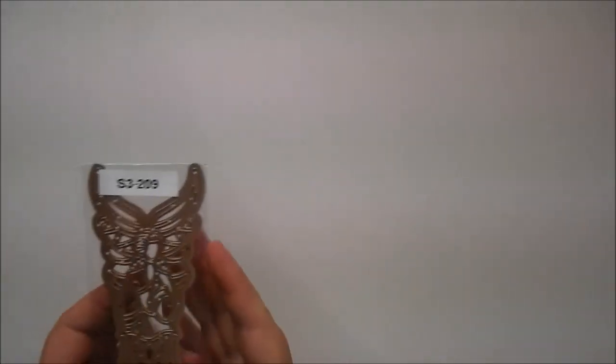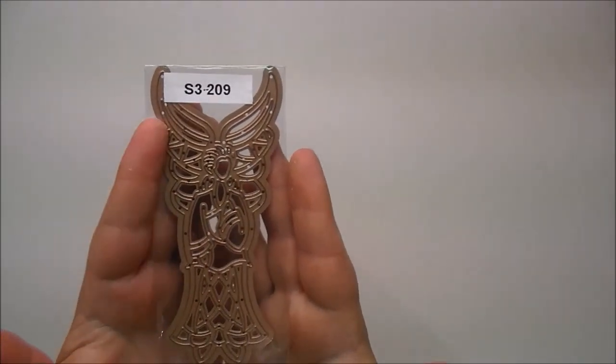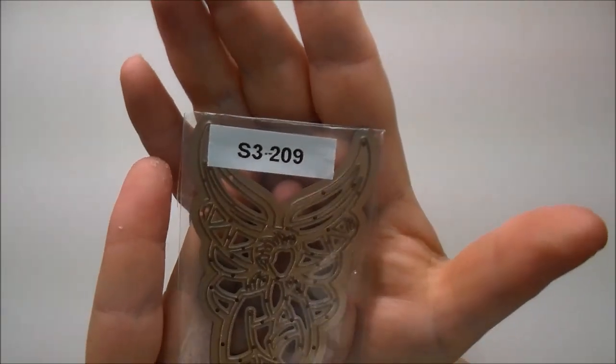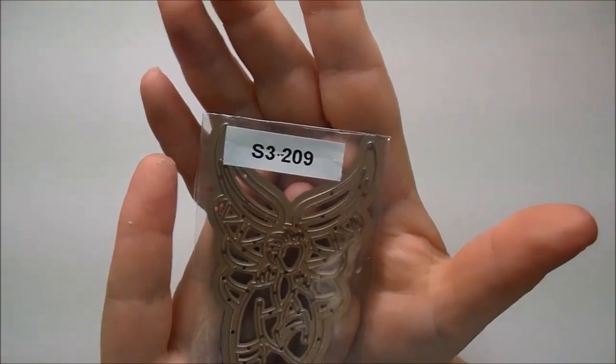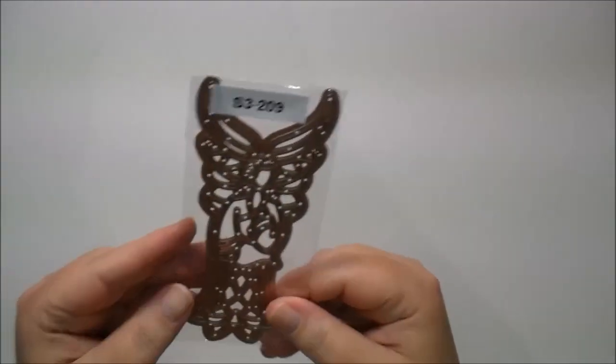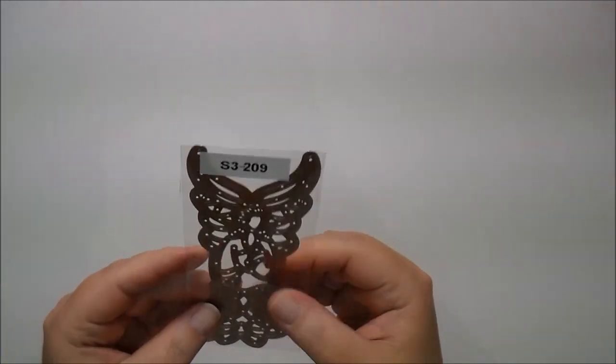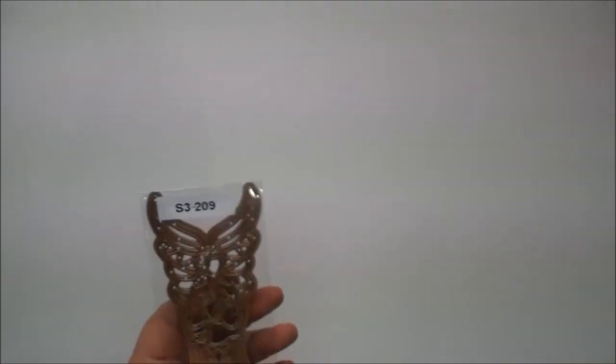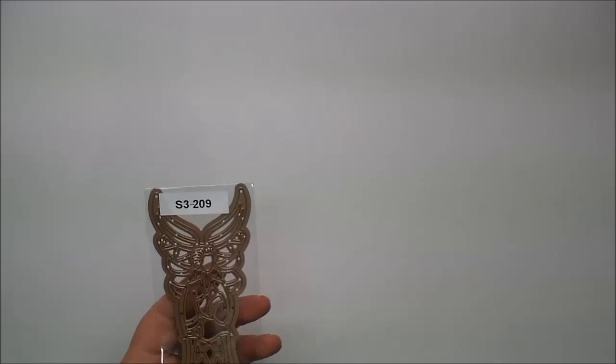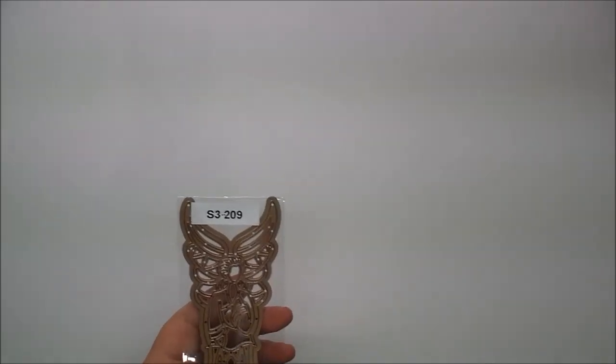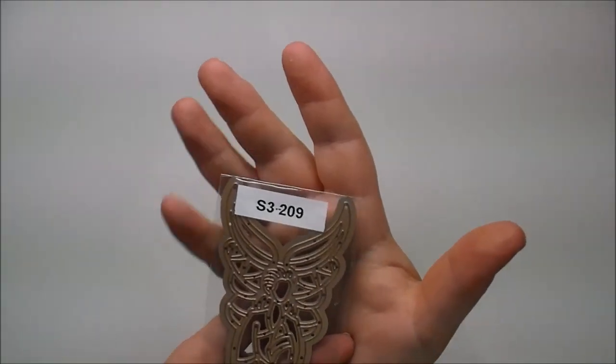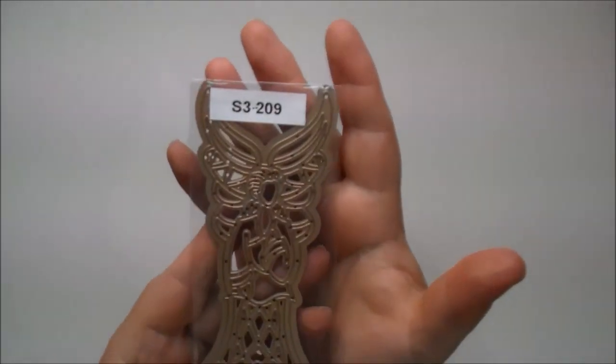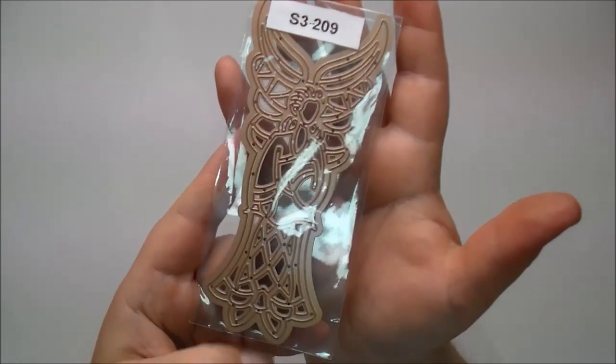The first one I want to share with you is Holiday Angel. She is a tall angel here. This one is S3-209 and I believe she's available now. When you go to Cut at Home, when you look on the website on the right, there's going to be a custom search. You can just type in this number and it'll bring up this product. Again, this one is Holiday Angel, super intricate, very pretty.